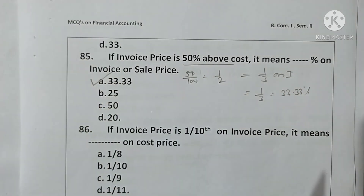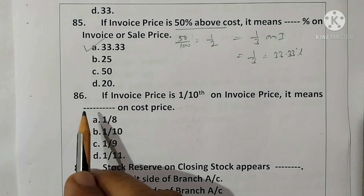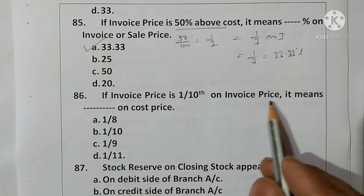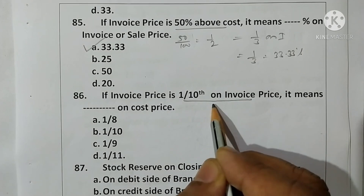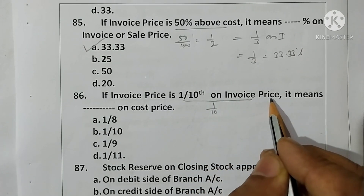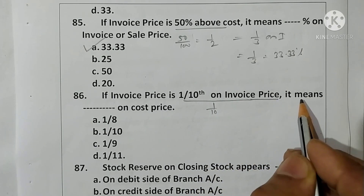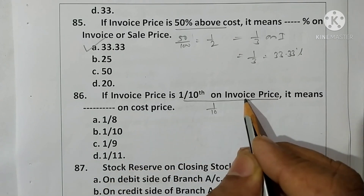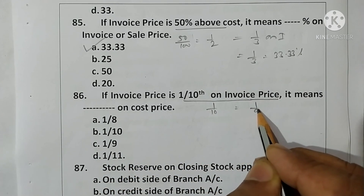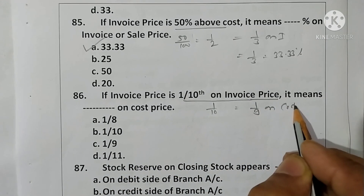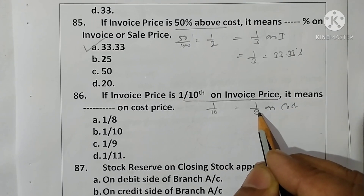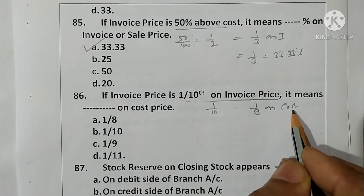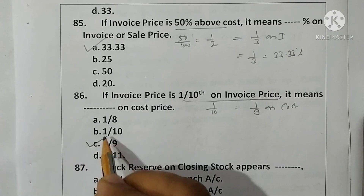Question 86: If invoice price is one-tenth on invoice price, what is the percentage on cost price? One-tenth on invoice price means one-ninth on cost price, because the denominator is one less on cost price than on invoice price. Therefore one-ninth on cost price. Option C is correct.